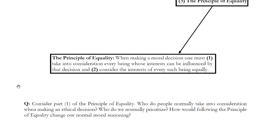We can encapsulate the principle of equality more formally as the following: when we make a moral decision, one must take into consideration every being whose interests can be influenced by that decision and consider the interests of every such being equally. So you have to think about everyone who can be affected by your action and also say that all those individuals have equal importance. The fact that someone is near you, or that you know them, or that they're a member of your own species, family, religion, or political party — none of that matters.